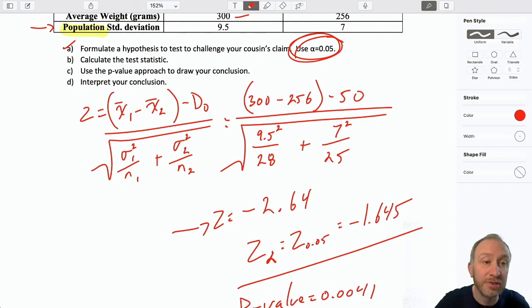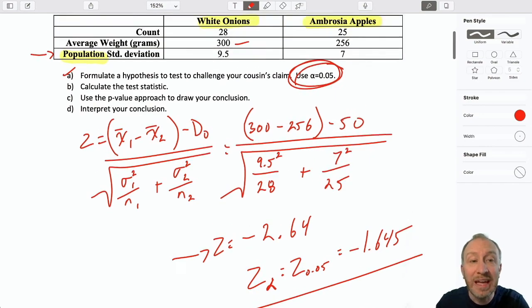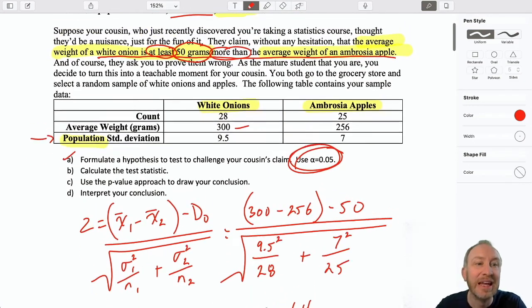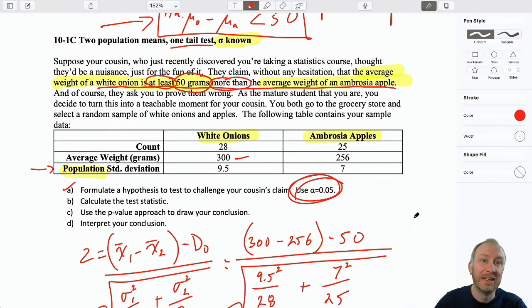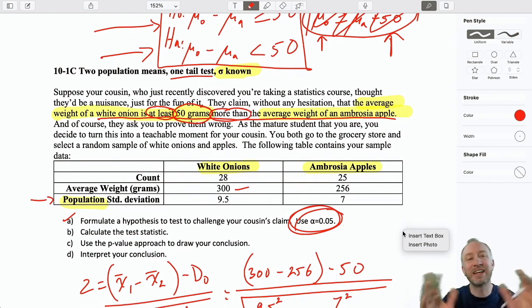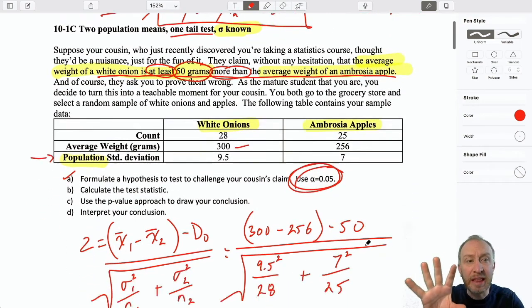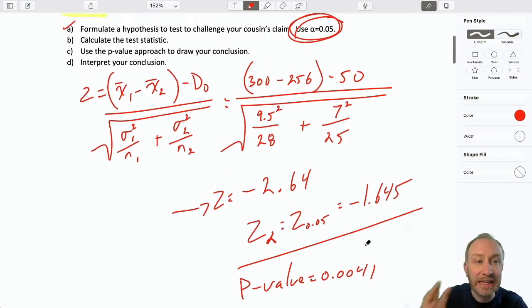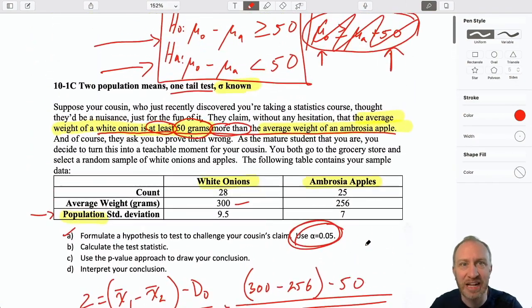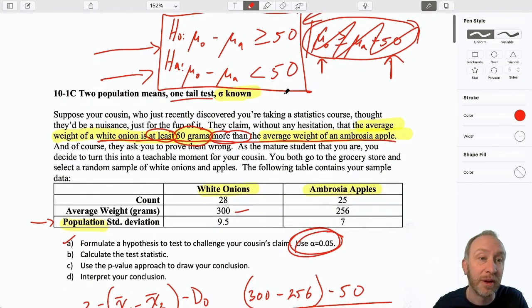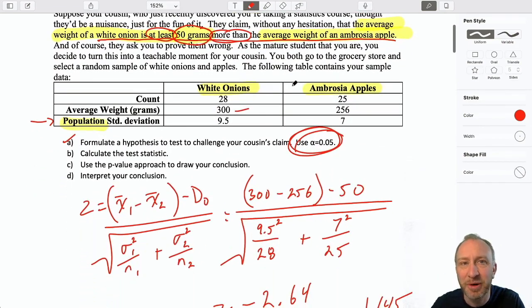We have evidence to show that our cousin's claim is wrong, that the average weight of a white onion is not at least 50 grams more than the average weight of an ambrosia apple. Okay. So, that's it. That's all there is to it. So, I trust you see that the majority of this test, it's the same as any other test. What was a little bit different here, and can sometimes be a little bit challenging, is that formulation of the test when we've got a hypothesized value that is different from zero. Okay. Thanks everybody for watching. I hope that was helpful.